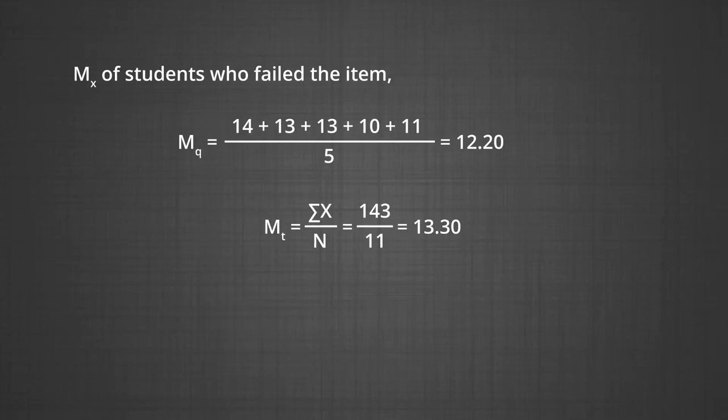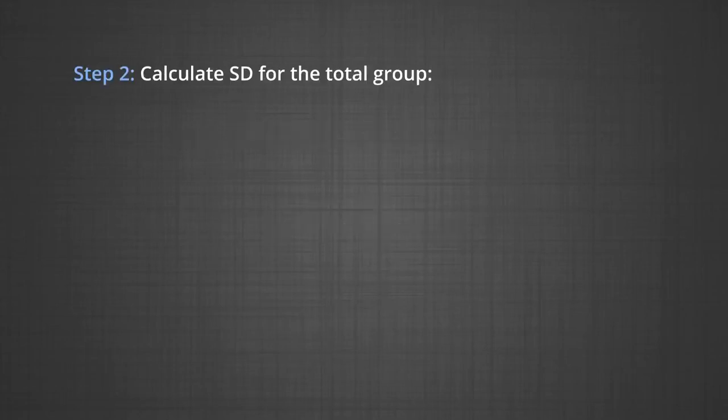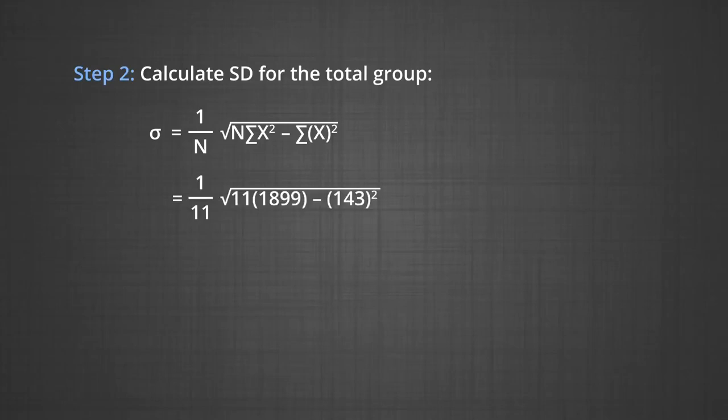We calculate the mean of students who fail the item: M_Q = (14+13+13+10+11)/5 = 12.20. Mean of the total is ΣX/N = 143/11 = 13.30. We calculate standard deviation for the total group by the normal formula: σ = (1/N)√(N×ΣX² - (ΣX)²) = (1/11)√(11×1899 - 143²) = 1.91.